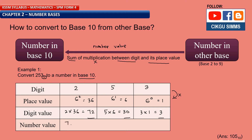To find the number value, you add all the values up: 72 plus 30 plus 3 equals 105. So 253 base 6 is equal to 105 base 10. To convert from any other base to base 10, you just find the number value this way.